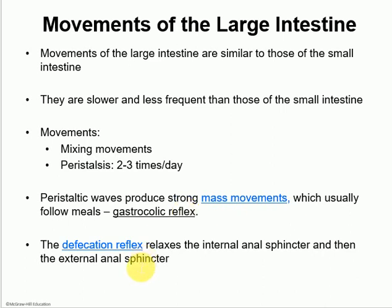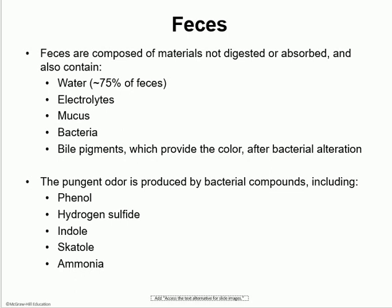The defecation reflex: the stretch of the rectum and the anal canal is going to relax the internal anal sphincter. It is up to the individual to control the external anal sphincter and relax it when appropriate. The external anal sphincter is what we teach kids to control — when they are potty trained, we are really training them to control the external anal sphincter. Feces are really everything that the body did not or could not digest and did not absorb. Feces are mostly made out of water. There are also some electrolytes, mucus, bacteria, and bile pigments, which give the characteristic color.